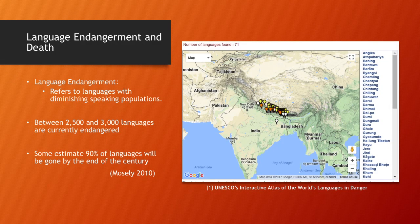So, language endangerment and death. It's a very complex issue, and I'm going to give you just some cursory background information. Essentially, language is inextricably tied to human beings. Humans are mortal. Human groups can disband, and with that, those languages can disband as well.